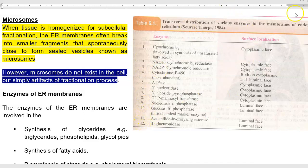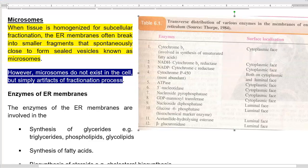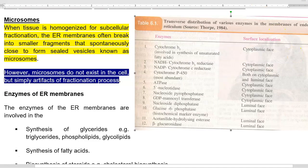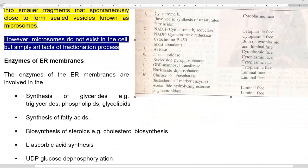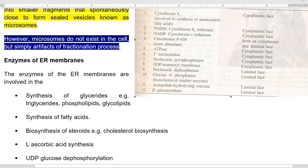Next, we look at the enzymes present in the endoplasmic reticulum and their roles. Enzymes of the endoplasmic reticulum are involved in various processes such as synthesis of glycerides — for example, triglycerides, phosphoglycerides, and glycolipids — synthesis of fatty acids, and biosynthesis of steroids, especially cholesterol biosynthesis.